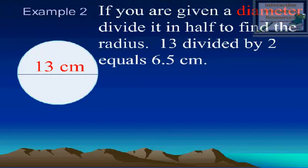If you are given a diameter, divide it in half to find the radius. 14 divided by 2 equals 6.5 centimeters.